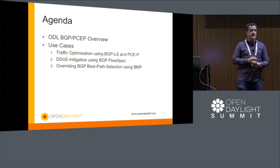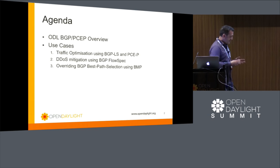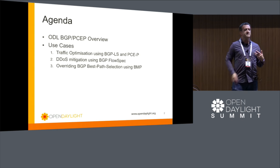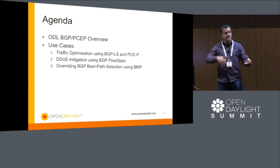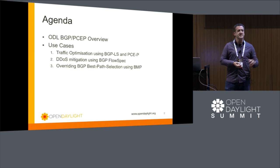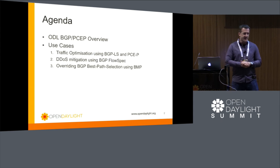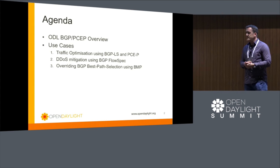I'm afraid I failed to stay up all last night hacking, so the use cases may or may not work, but I sacrificed to the demo gods and there's some hope. The three use cases: one is traffic optimization using BGP and PCEP — this is really where ODL BGP came from, using BGP-LS to learn stuff about the network and PCEP to program LSPs, using segment routing this time rather than RSVP-TE. Then DDoS mitigation using FlowSpec, and finally overriding best path selection using BMP.